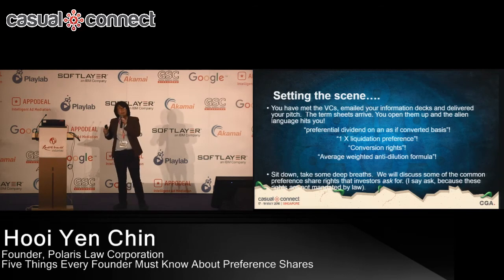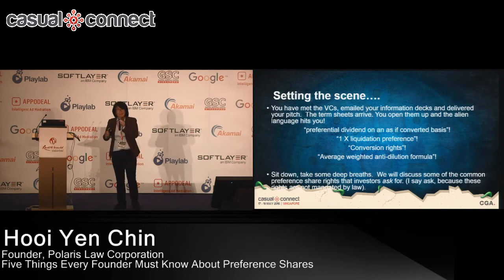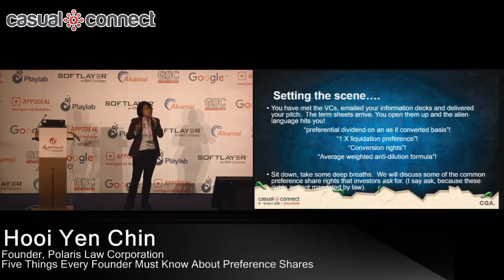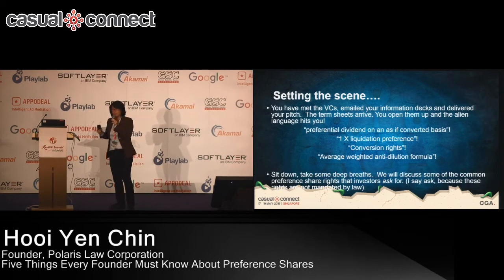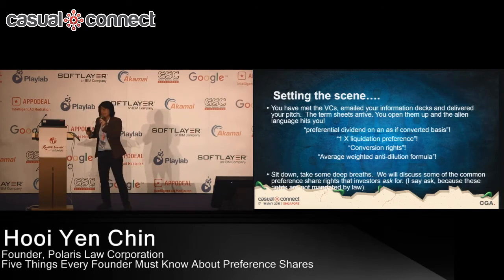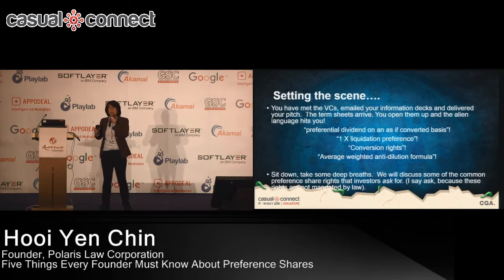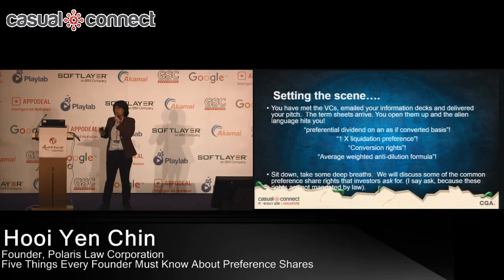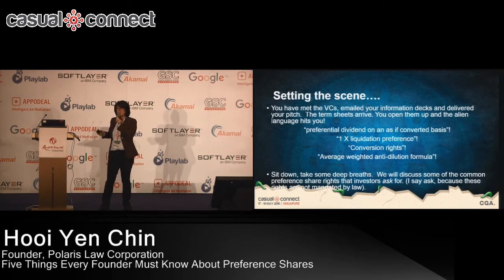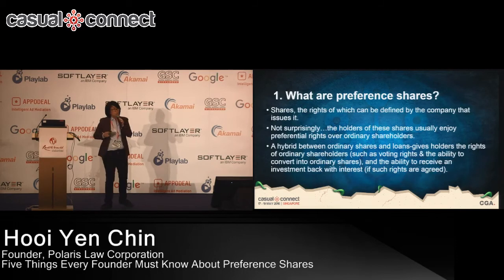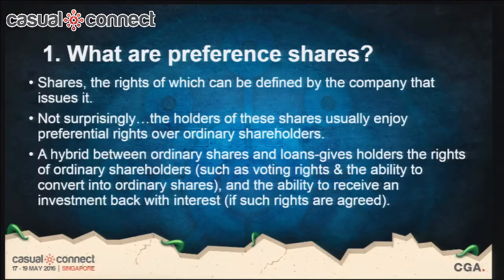Today we're going to do a deep dive into some of these commonly used terms. The term sheet typically talks about preference shares, and when you open it you'll see terms like: preferential dividend on an as-if converted basis, a 1X liquidation preference, conversion rights, and the weighted average anti-dilution formula. Our first point will be to understand what preference shares are.